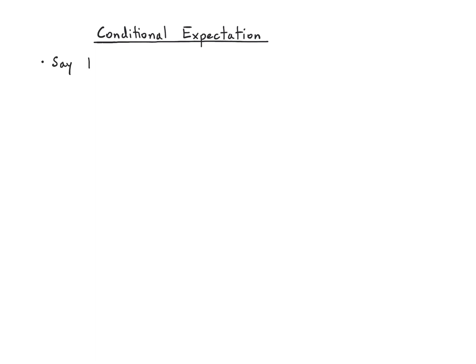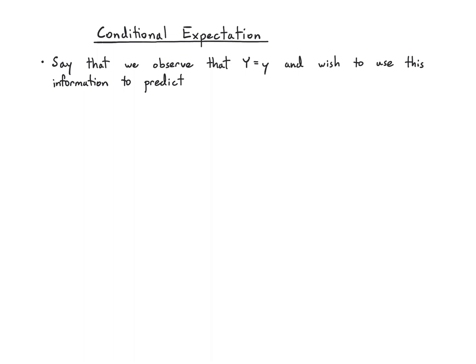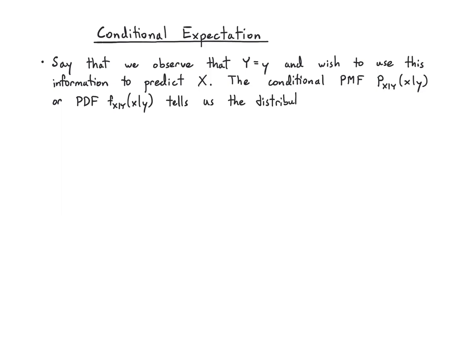So let's try to ground things a little bit. Say that you've observed that the random variable Y is equal to little y, and you want to use this information to predict the random variable X. We know that the conditional PMF p of x given y, or the conditional PDF f of x given y, tells us the distribution of X once we know Y.